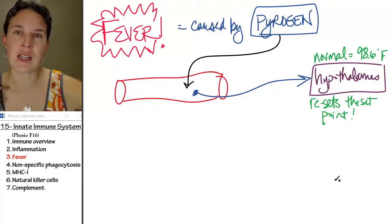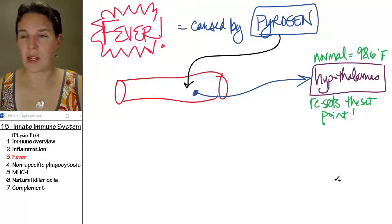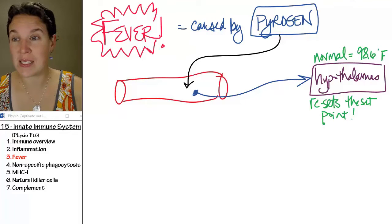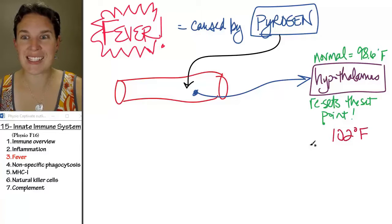Pyrogen comes in, and hypothalamus resets the set point. And now the hypothalamus says, yeah, the set point is awesome, it's 102. That's the new set point.